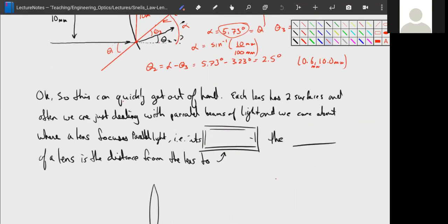Each lens has two surfaces and after we're just dealing with parallel beams of light, and we care about where the lens focuses that parallel beam of light, i.e. its focal point.